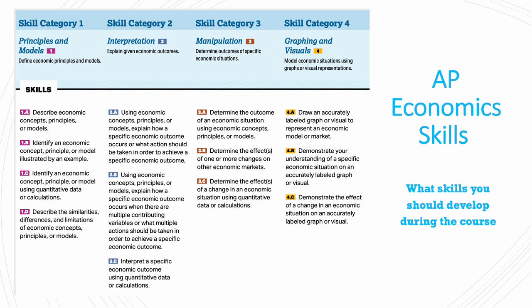The second skill category would be interpretation, which is to explain given economic outcomes — basically using economic concepts, principles, and models to explain how a specific economic outcome occurs, or what actions should be taken in order to achieve a specific outcome. You would use these concepts or models to explain a specific outcome when there are multiple contributing variables, or what multiple actions should be taken to achieve a certain outcome, and you would interpret this information using quantitative data or calculations.